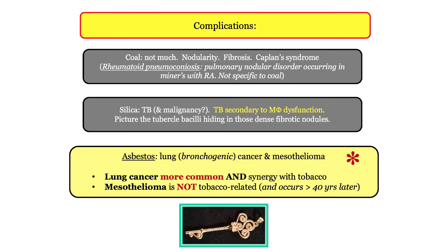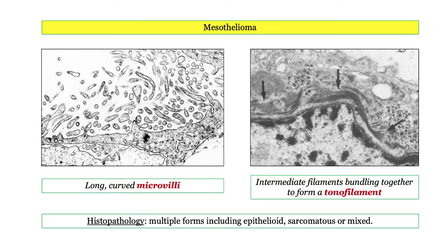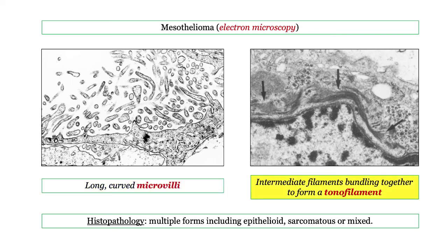You should have familiarity with the pathology of mesothelioma. There are multiple histopathologic subtypes, including epithelioid, sarcomatous, or mixed — so you are unlikely to see a light microscopy specimen, as there is no one classic appearance. You are much more likely to see an electron microscopy description. On the left: the long curved appearance of the microvilli. On the right: tonofilaments, simply bundles of intermediate protein filaments. Microvilli and tonofilaments are the characteristic pathologic descriptions you can anticipate in a mesothelioma question.